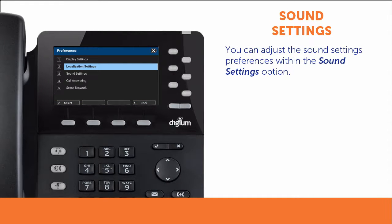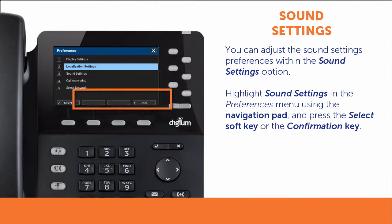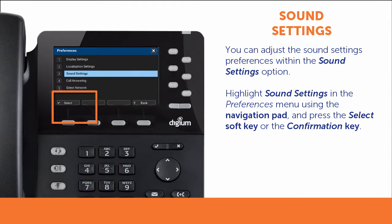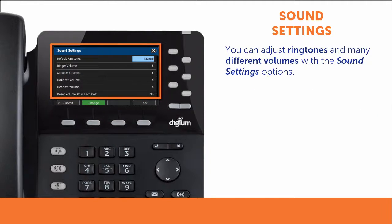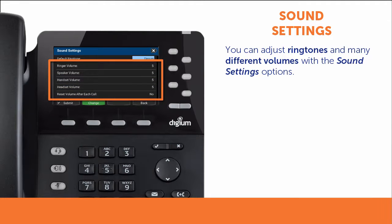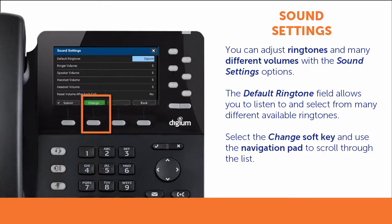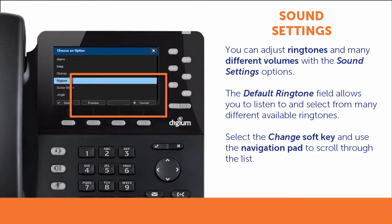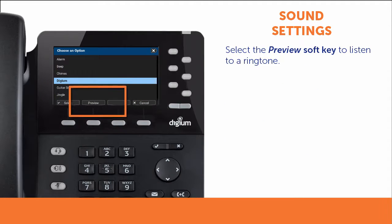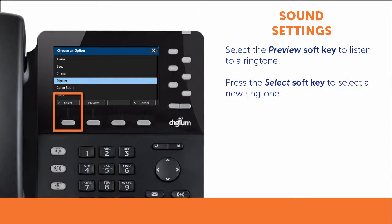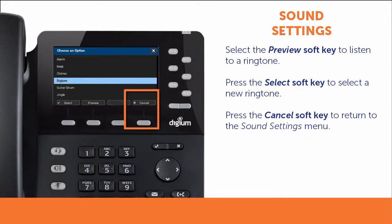You can also adjust your phone's sound settings from the Preferences menu. Using the navigation pad, highlight Sound settings in the Preferences menu and choose the Select soft key or press the confirmation key on the phone. Sound settings allows you to adjust ringtones and turn the call waiting tone on or off. The default ringtone field allows you to listen to the available ringtones for your phone. Select the Change soft key and use the navigation pad to scroll through the list. Select the Preview soft key at any time to listen to a ringtone. Choose the Select soft key to select a new ringtone or the Cancel soft key to return to the Sound Settings menu.